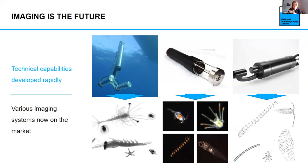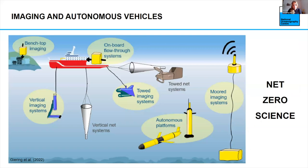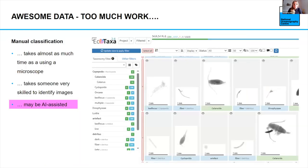The hope is that we can use such camera systems and integrate them on autonomous platforms — on ships, towed, in vertical profiles, on gliders and floats, or on a mooring. We can even use some of this technology in the lab to help get around the microscopy stage. This is really exciting. The problem is that the data is awesome, but there is too much of it. We're now at a moment where we're getting too much data for us to handle.